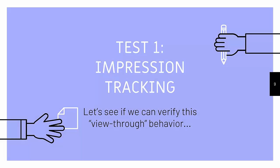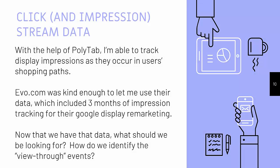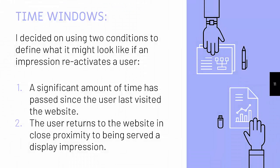So test number one: impression tracking. Let's see if we can verify that this view-through thing is even happening in the first place. I work with a company called Polytab, who does clickstream tracking, and they also do impression tracking. They have a pixel they send out to your display vendors, and that pixel fires off a notice every time they observe an impression to one of your users. That way you can track those impressions with a timestamp in your user's shopping path, and you can know when they happened and if they relate to their visits to your site. Evo.com was kind enough to share three months of that data, which included impression tracking for their Google Display remarketing campaign. Having that data, how do I even identify what a view-through event looks like? I tried to set it up through two chronological conditions: one is that the user has been away from the site for an extended period of time, so they're not currently shopping. And then two is, within very close proximity of being served an impression, they return to your site.